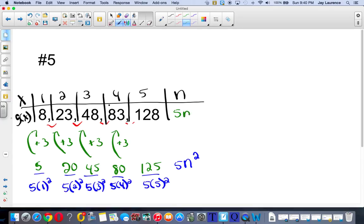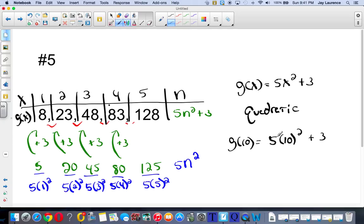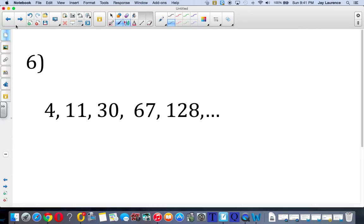So, therefore, the nth term will be 5n squared plus 3. My function, g of x, will be 5x squared plus 3. This is also quadratic. If I was going to figure out, say, g of, I don't know, 10, I would plug 10 in. I must follow the order of operations. This is not 50 squared. This is 10 squared, which is 100. And then, 5 times 100 is 500 plus 3. And that equals 503. That's the 10th term in this sequence. Okay. Let's move on here.